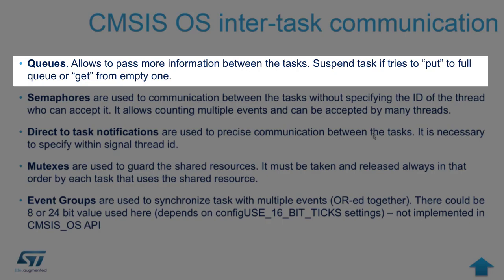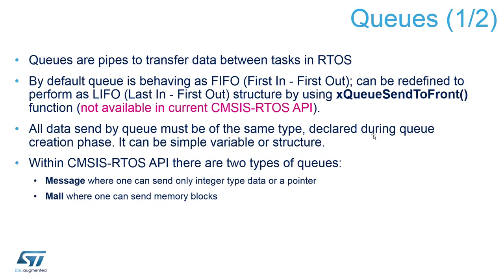The first topic is a queue. A queue can be expressed as a pipe or FIFO between different tasks in an RTOS. You can put a number or an object with a bigger size into the queue. A number is a 32-bit value that can be typecast as a signed or unsigned number, or used as a pointer. It's transmitted as a union with signed, unsigned, and pointer variants, so you choose how you decode and use the value.